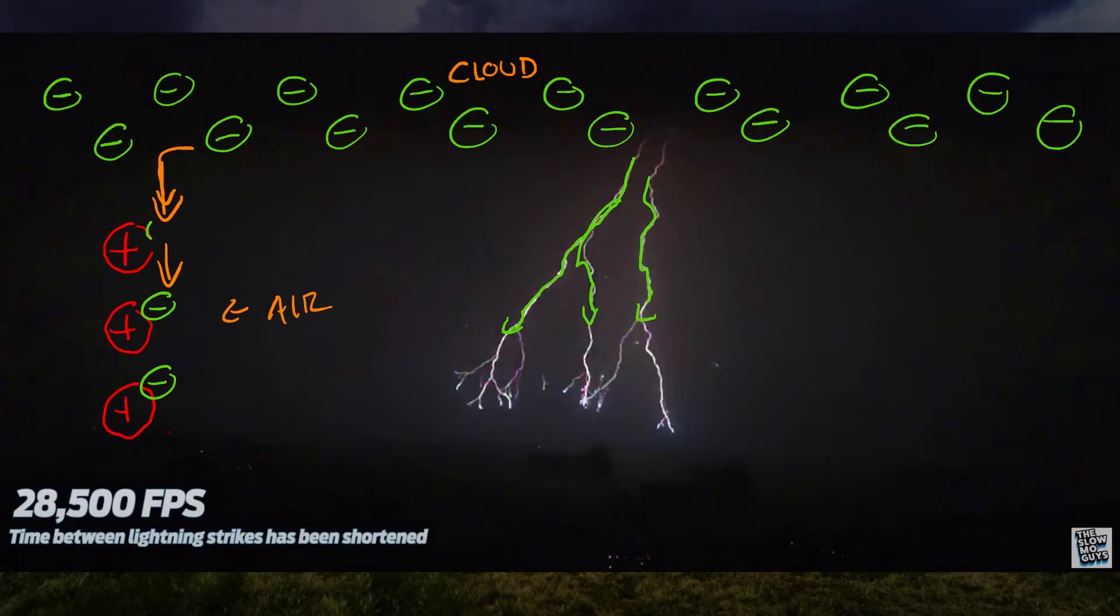Now, the opposite is happening from the ground where it's creating plus charges that are moving up. And when a positive reaches a negative or a negative reaches a positive, then we've kind of created a conductor or a wire from the plus to the minus. And now the electrons are all going to flow down in that direction and we will get a lightning bolt.